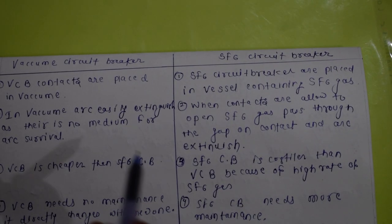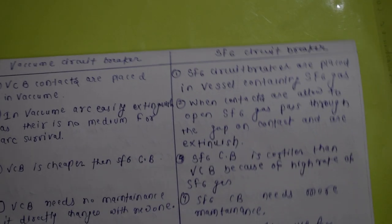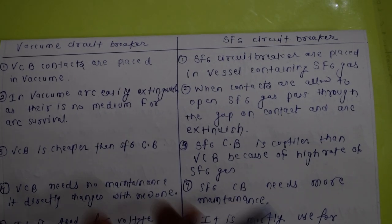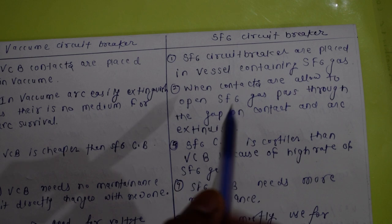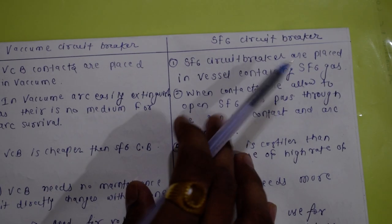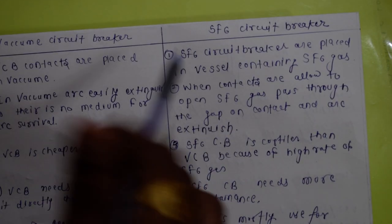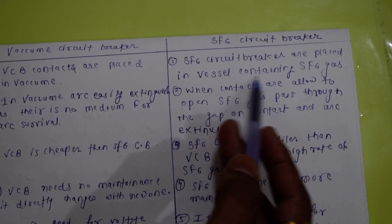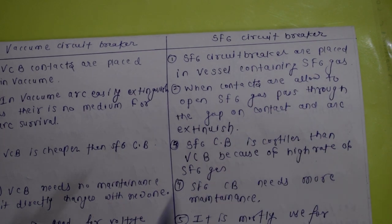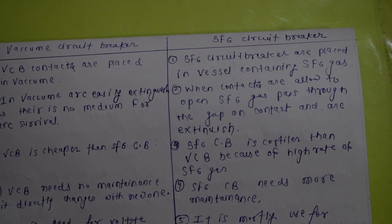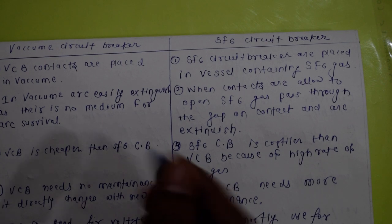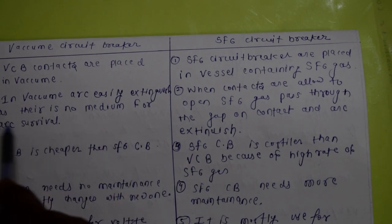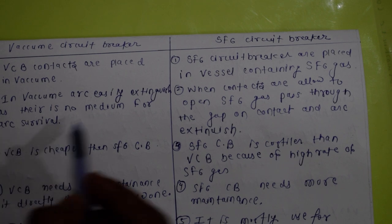In a vacuum circuit breaker, the contacts are placed in vacuum — that is why it is called a vacuum circuit breaker. In an SF6 circuit breaker, the contacts are placed in a vessel surrounded by SF6 gas. In vacuum, the arc is easily extinguished because there is no medium for arc survival.